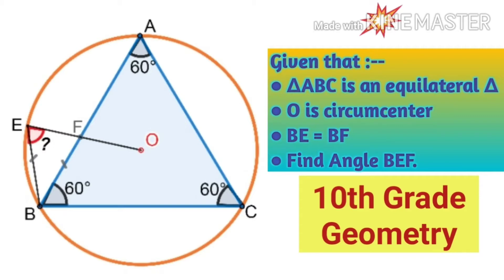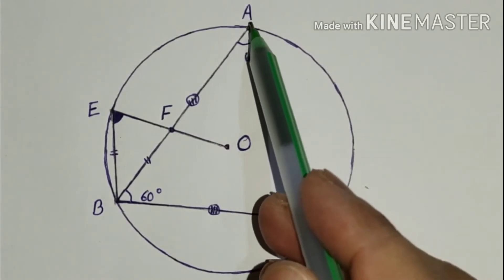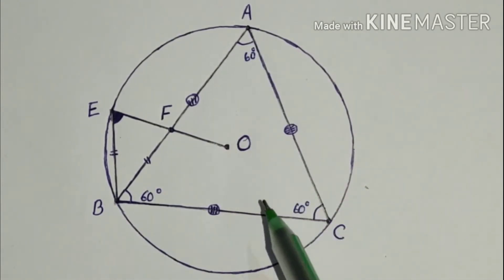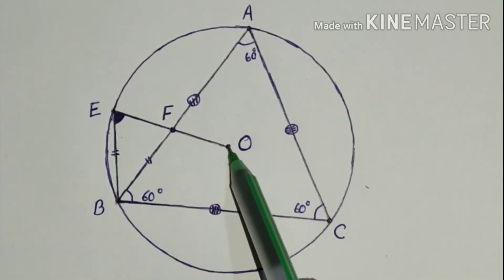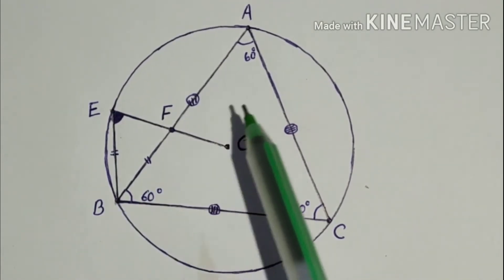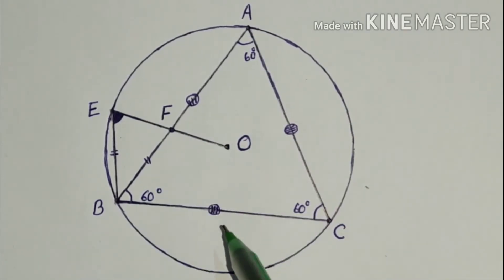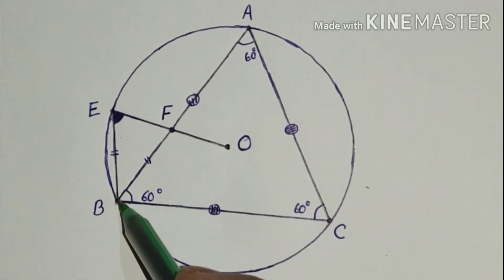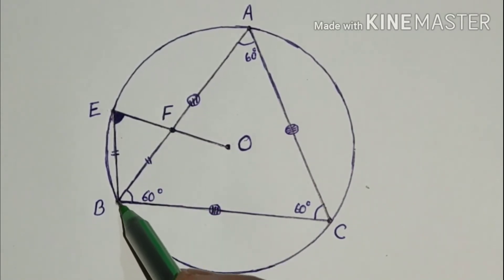Let us find angle BEF. We are given an equilateral triangle ABC. O is the center of the circle and O is the circumcenter of this inscribed triangle ABC. We are given BE is equal to BF. And we have to find angle BEF or angle BEO.